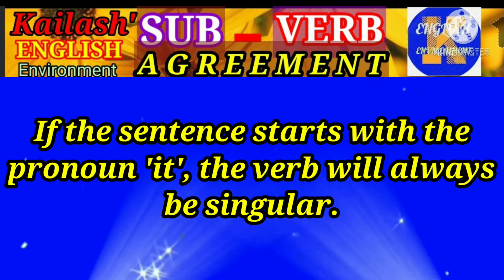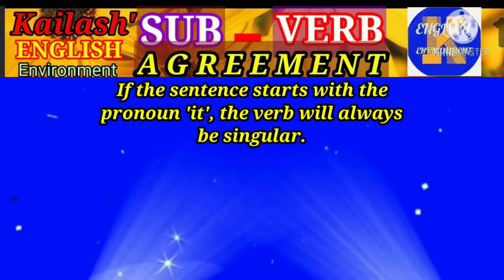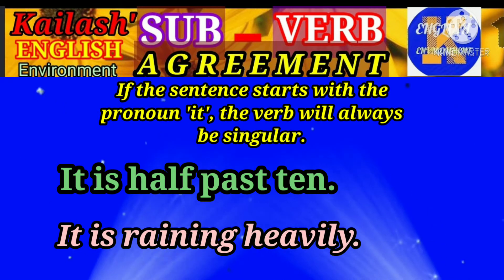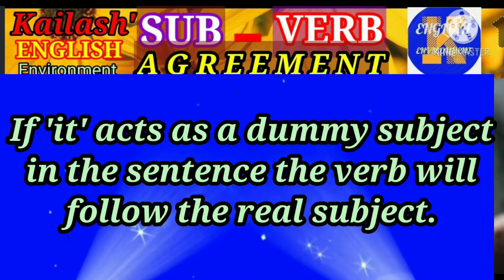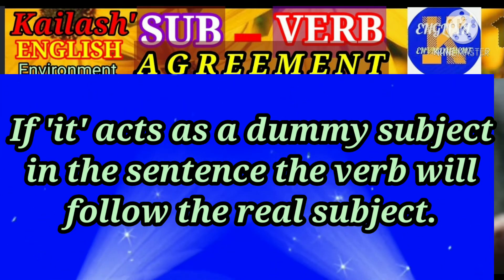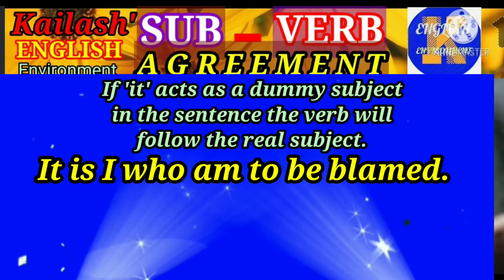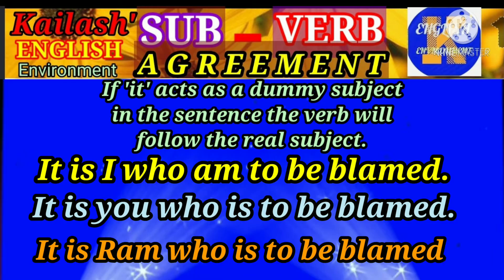If the sentence starts with the pronoun 'it,' the verb will always be singular. For example, 'It is half past ten,' 'It is raining heavily,' etc. If 'it' acts as a dummy subject in the sentence, the verb will follow the real subject. For example, 'It is I who am to be blamed.' 'But it is you who are to be blamed.' 'It is Rama who is to be blamed.'